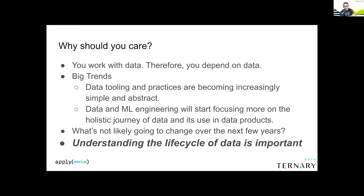I'm writing a book on data engineering, and one of the problems of writing a book right now is: how do you know what's not going to change over the next few years? Why dedicate yourself to writing a book if the material is going to be obsolete by the time it goes to print? I started writing 'Fundamentals of Data Engineering,' coming out on O'Reilly this summer, thinking about what's immutable — and the life cycle is going to become more of a hot topic.